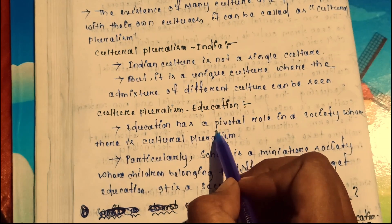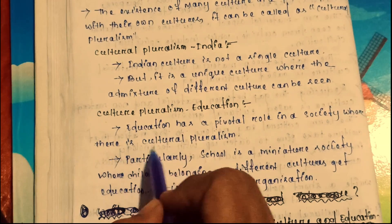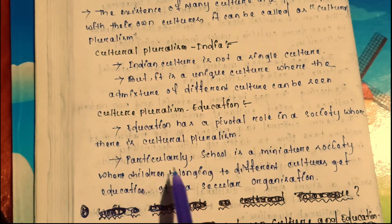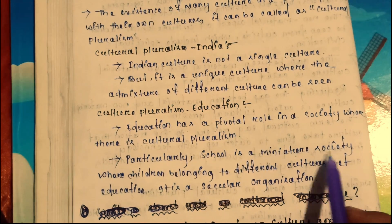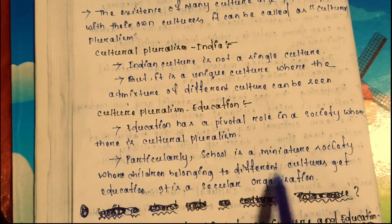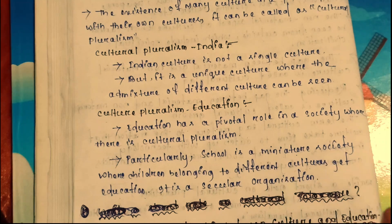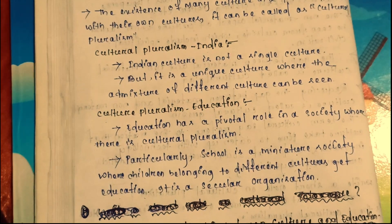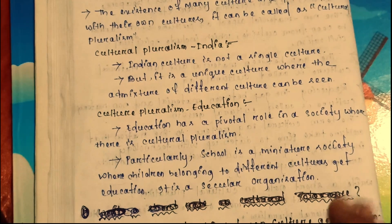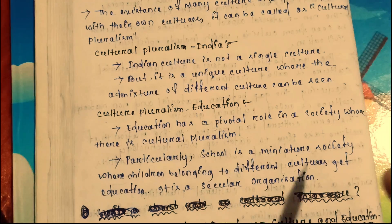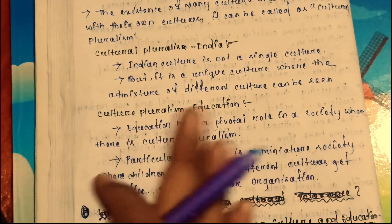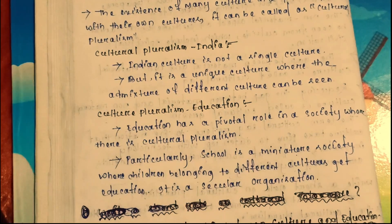Education has a pivotal role in a society where there is cultural pluralism. Particularly, school is a mixture — a managed society where children belonging to different cultures get education. It is a secular organization. Whether Hindu, Muslim, or Christian, all cultures are present and children of all backgrounds can study there.